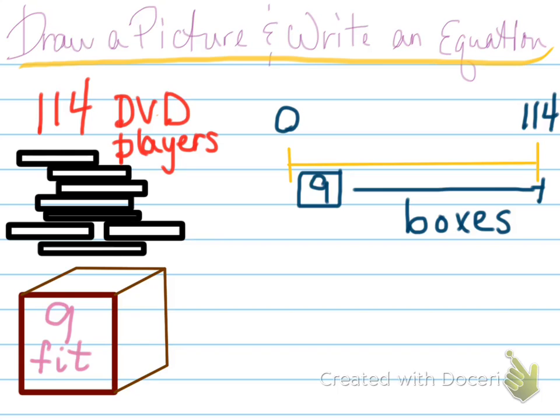So I'm going to draw a number line. I start at 0 I go to 114 and I know that in each box I can fit 9 of the DVD players. So I've got to figure out how many boxes do I need total.